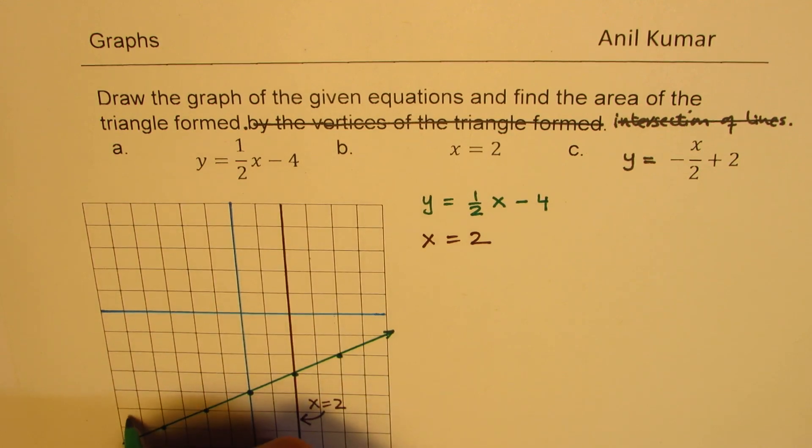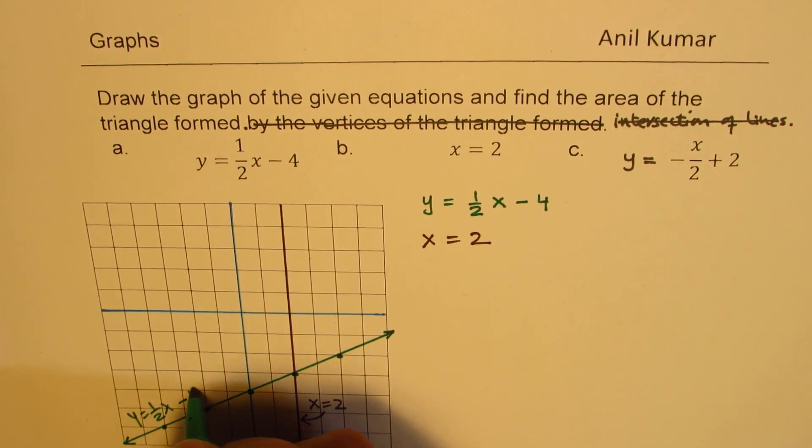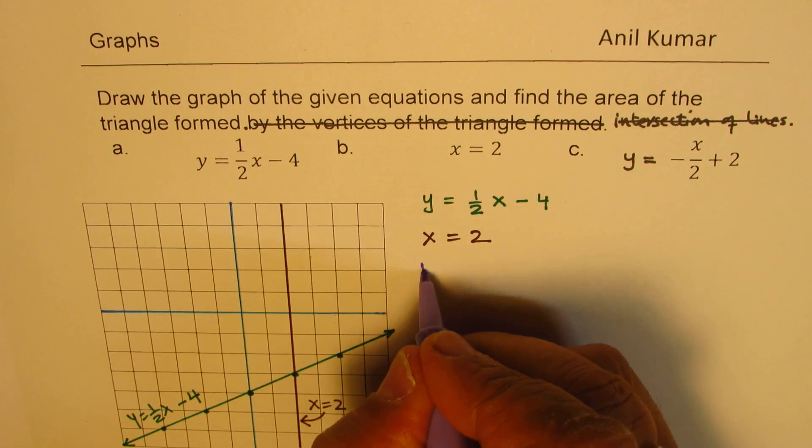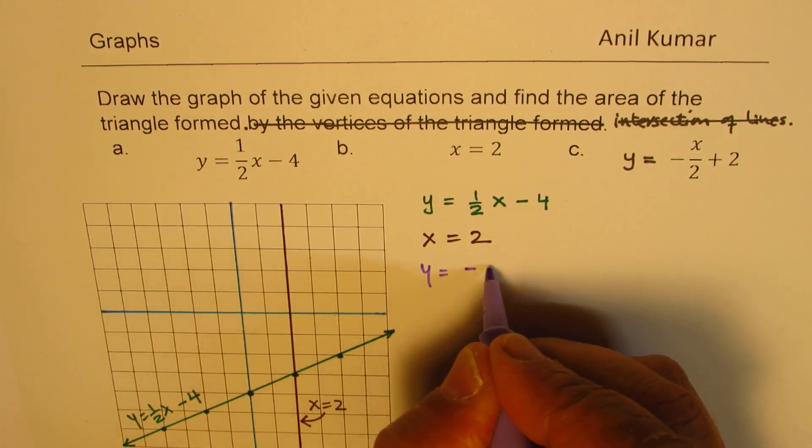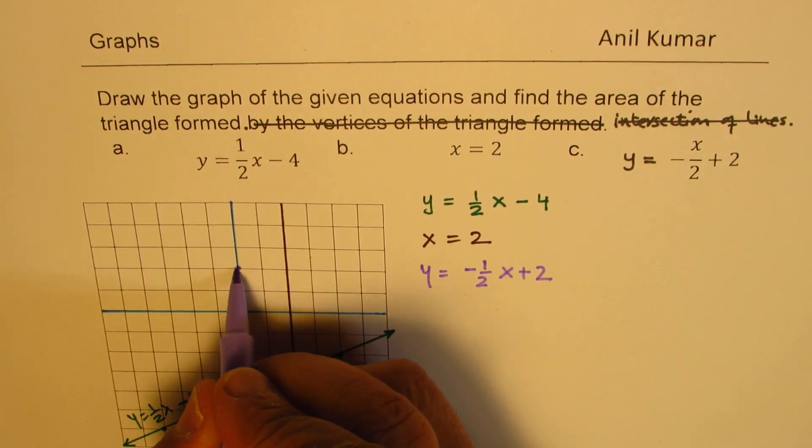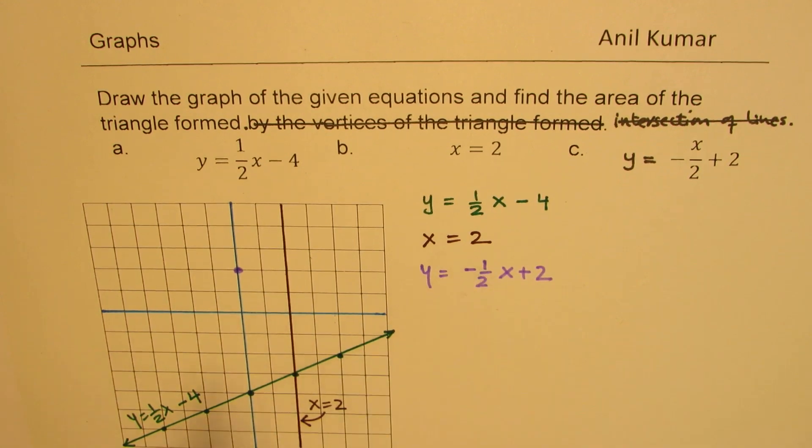The first one is y equals half x minus 4. Now, let's draw the last line here, the third line, which is y equals minus, you can write this as, half of x plus 2. Now, in this case, the y-intercept is at 2, and the slope is minus half.